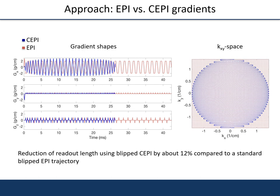Here the gradients of a standard EPI and our CEPI trajectories are shown, as well as the corresponding coverage in the KXY plane. To achieve minimal readout length, we use the maximum gradient power and slew rate. A reduction of the readout length by about 12% compared to the standard blipped-CAIFI EPI can be obtained this way.